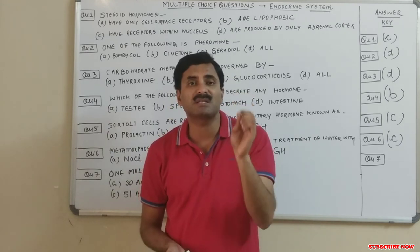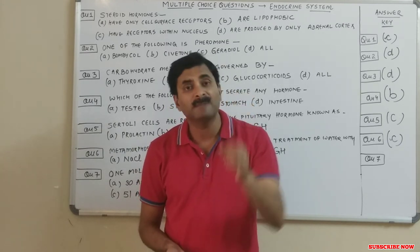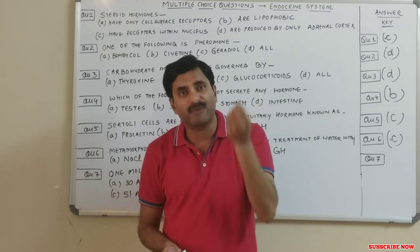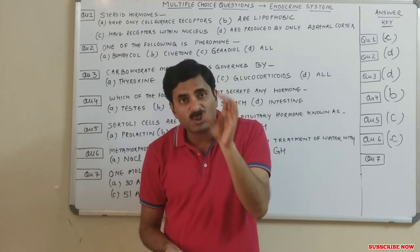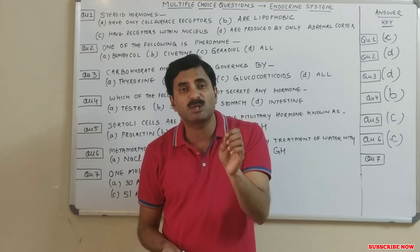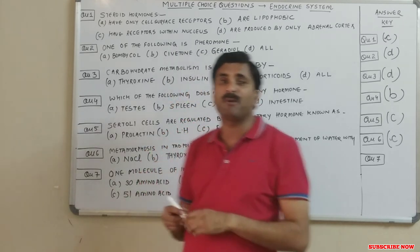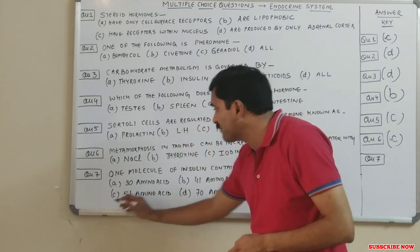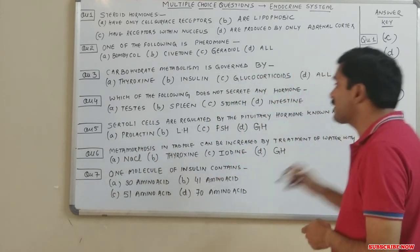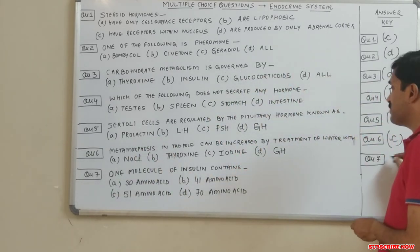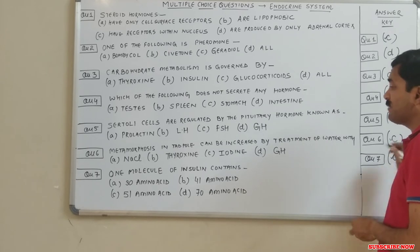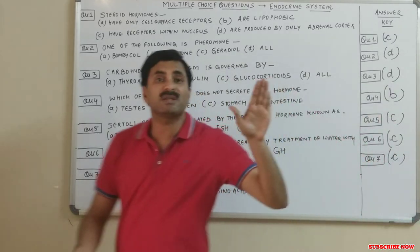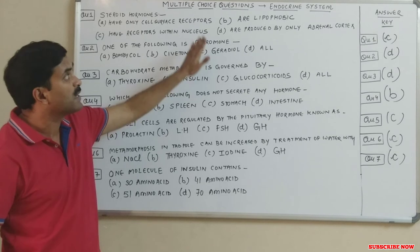Chain A has 21 amino acids and chain B has 30 amino acids, giving a total of 51 amino acids. The two chains are joined by disulfide bonds. Therefore, the answer for question seven is C: 51 amino acids.